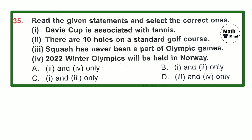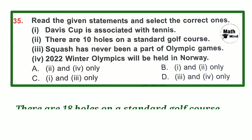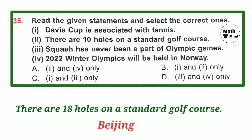Question number 35: Read the given statements and select the correct ones. Statement 1 — Davis Cup is associated with tennis: correct. Statement 2 — there are 10 holes on a standard golf course: false, there are 18 holes. Statement 3 — squash has never been part of the Olympic Games: correct. Statement 4 — 2022 Winter Olympics will be held in Norway: false, it is in Beijing. Beijing became the first city to host both Summer and Winter Olympic Games. So option C is correct — only statements 1 and 3 are correct. Thanks for watching — like, share, and subscribe to get more videos. Bye bye.